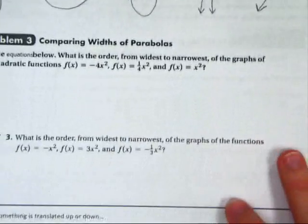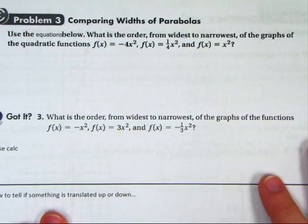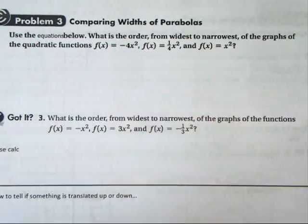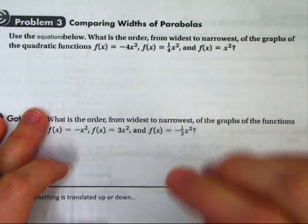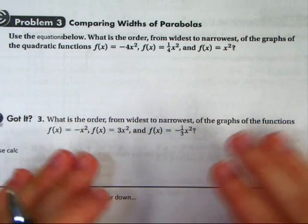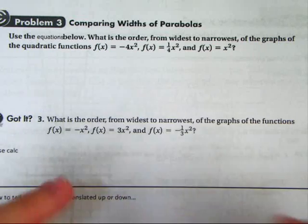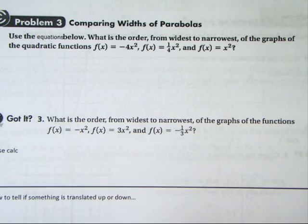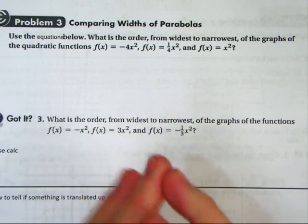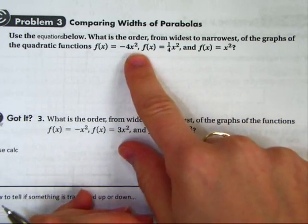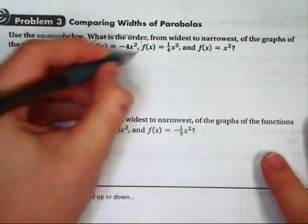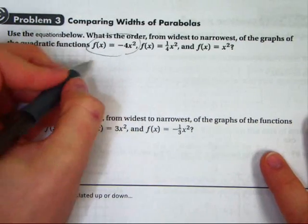Let's go ahead and try to apply that in problem 3. Use the equations below. So, what is the order from widest to narrowest of the graphs of the quadratic functions? All right, take a look at them. Remember, I'm not necessarily concerned about the negatives. The only thing a negative will do is flip it upside down. Let's find the narrowest, the skinniest of all. Well, that's the biggest number, the 4. So this one is the narrowest.